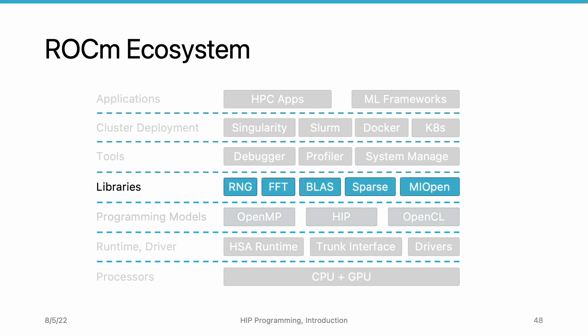Above the programming model level, we have libraries, such as Random Number Generator, Fast Fourier Transform, Linear Algebra, BLAS, and Sparse Linear Algebra libraries. We also have MIOpen, which implements the layers in deep neural networks.